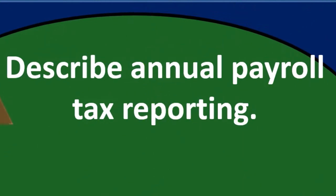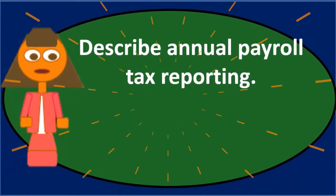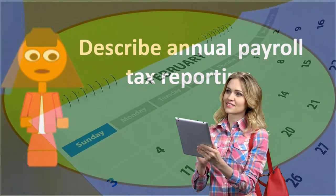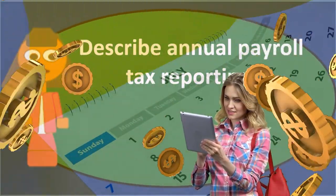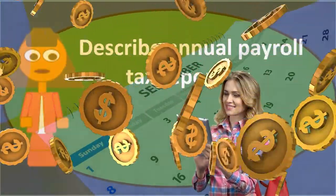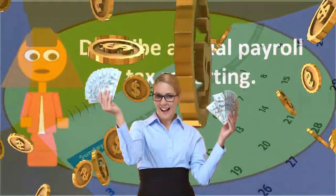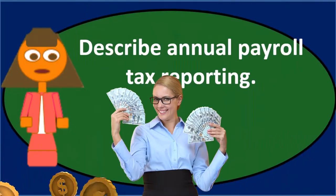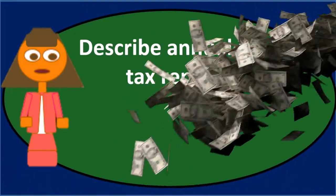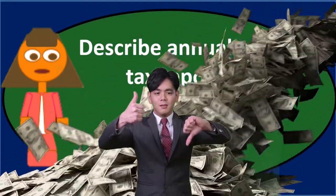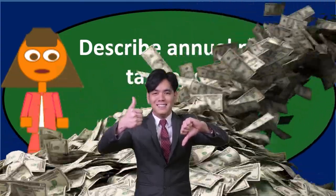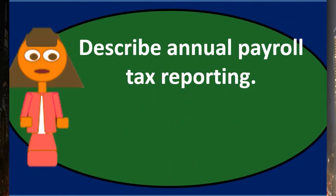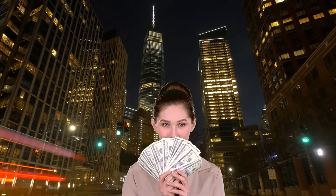Then we have the W-2 and W-3 forms. The W-2 is the end-of-year reporting form which includes our federal income tax wages, federal income tax withholdings, social security tax wages, social security tax withholdings, Medicare tax wages, and Medicare tax withholdings. The wages for federal income tax, social security, and Medicare are all based on gross earnings but could differ and often will differ.